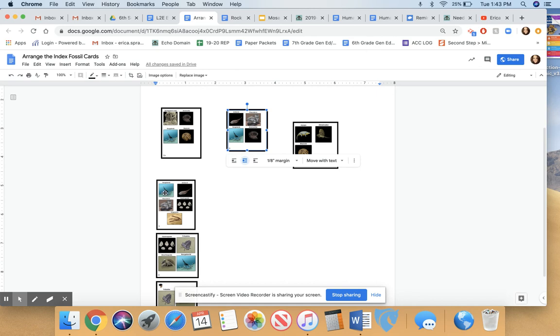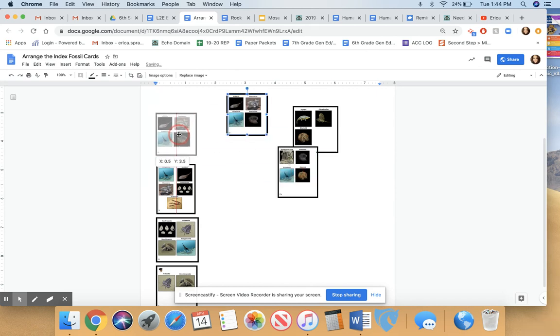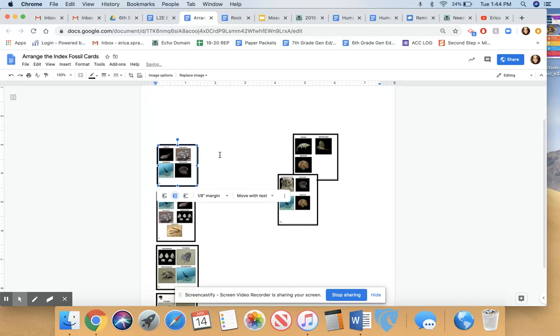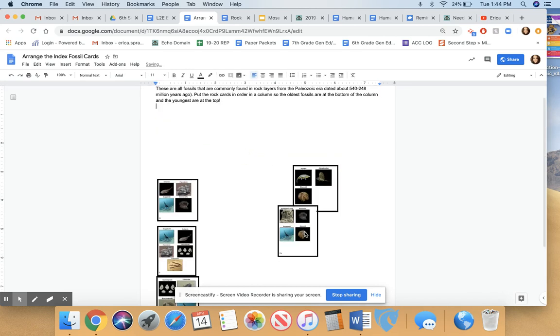So, in this next layer, I've still got eurypterids. So, they must have been on Earth for a good amount of time. Notice trilobites are gone. Trilobites must have gone extinct. I have a few other things popping up in here. So, I see this here. I think that says placoderm. Oh, and I see this here. So, I'm going to scooch this over. Put that right there. Am I going to run out of room? Slide it down.